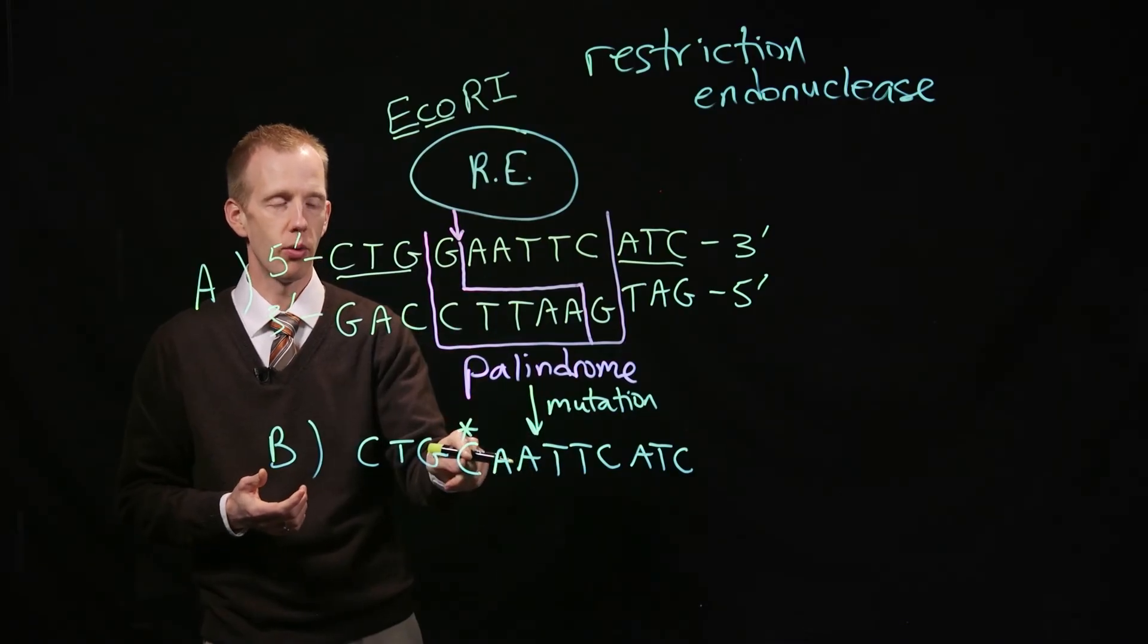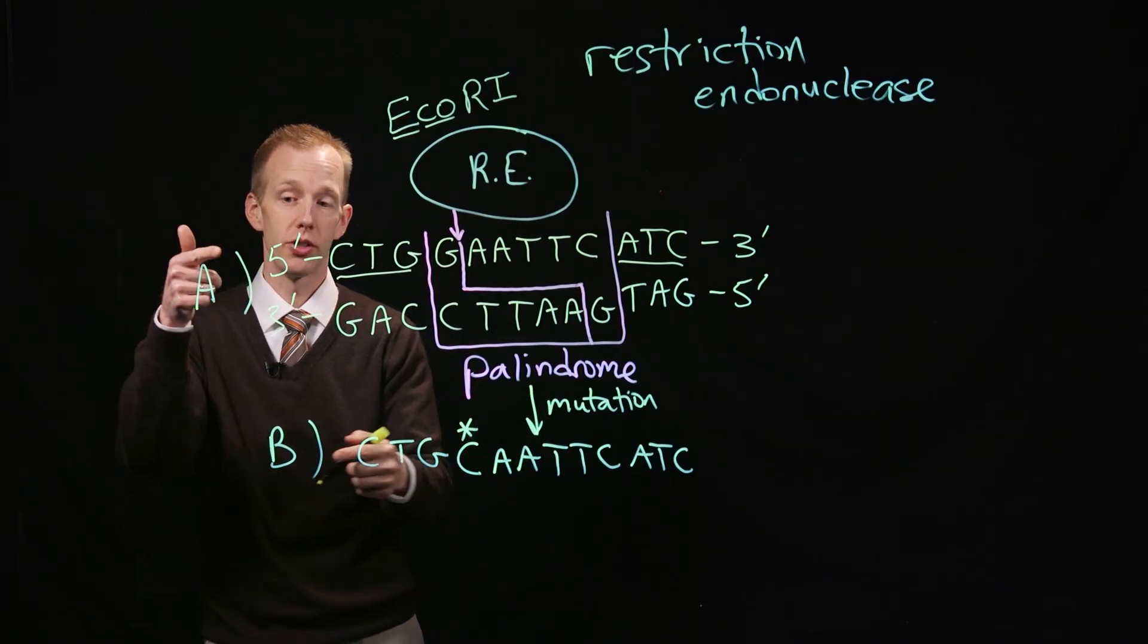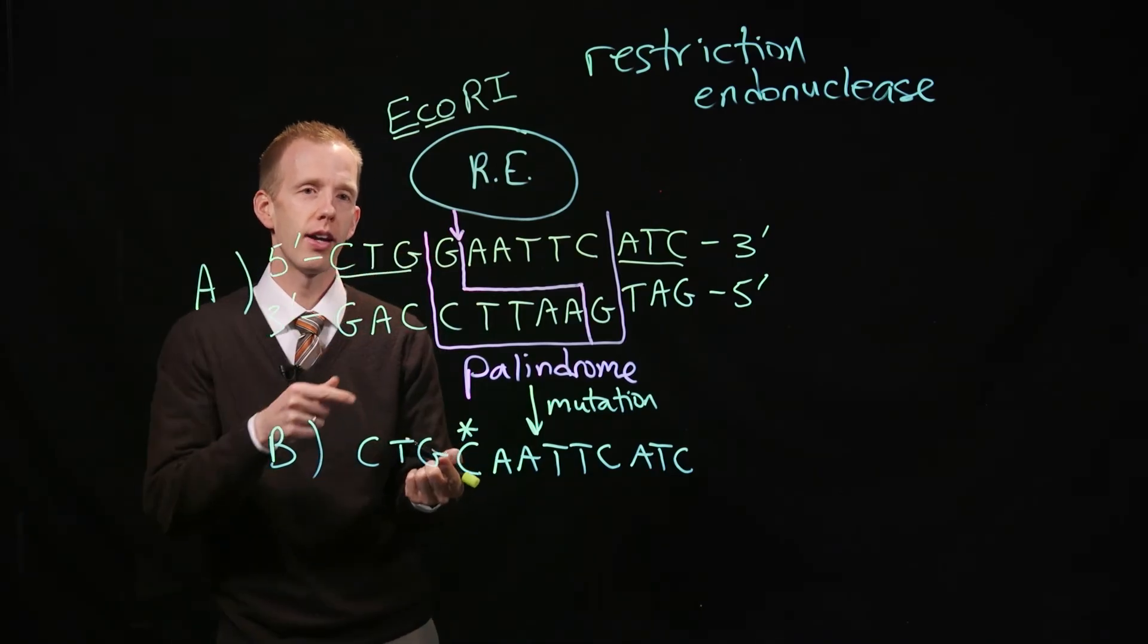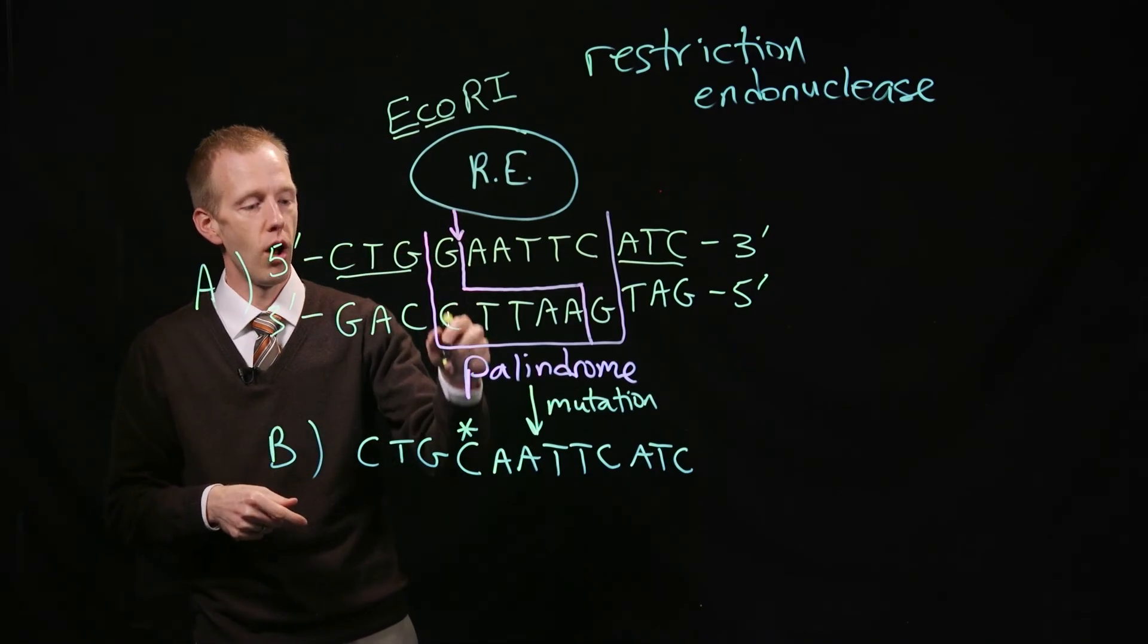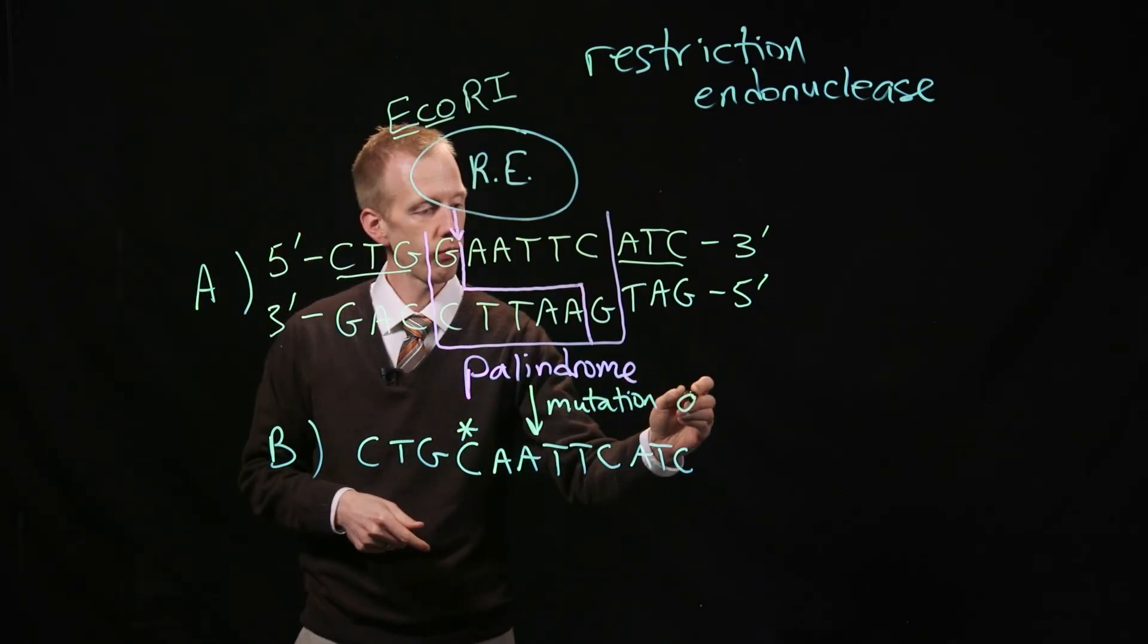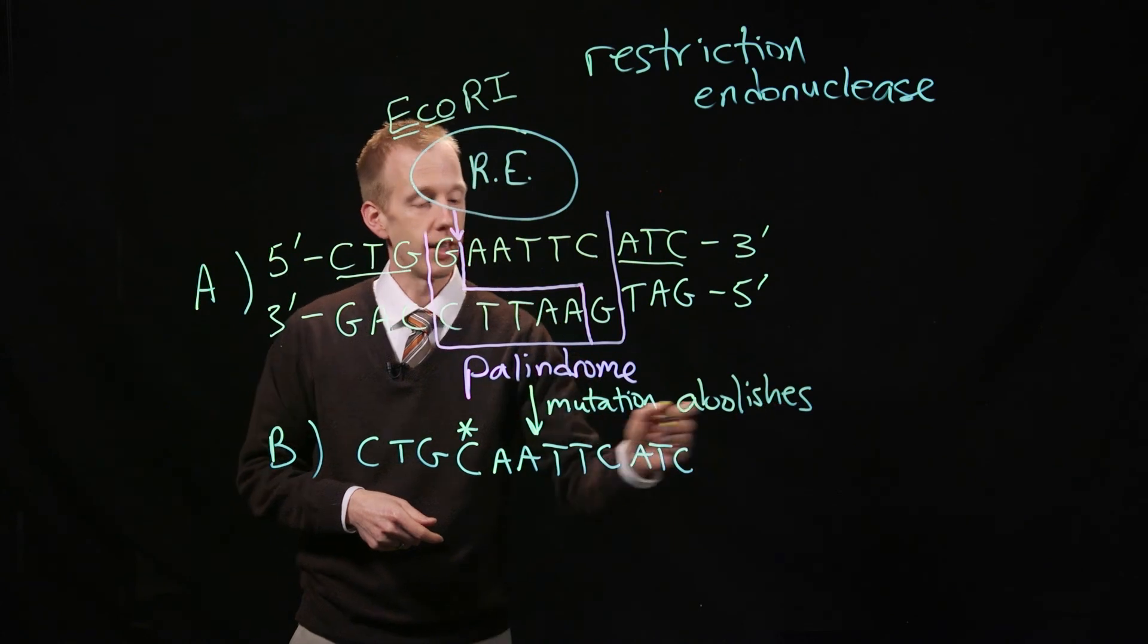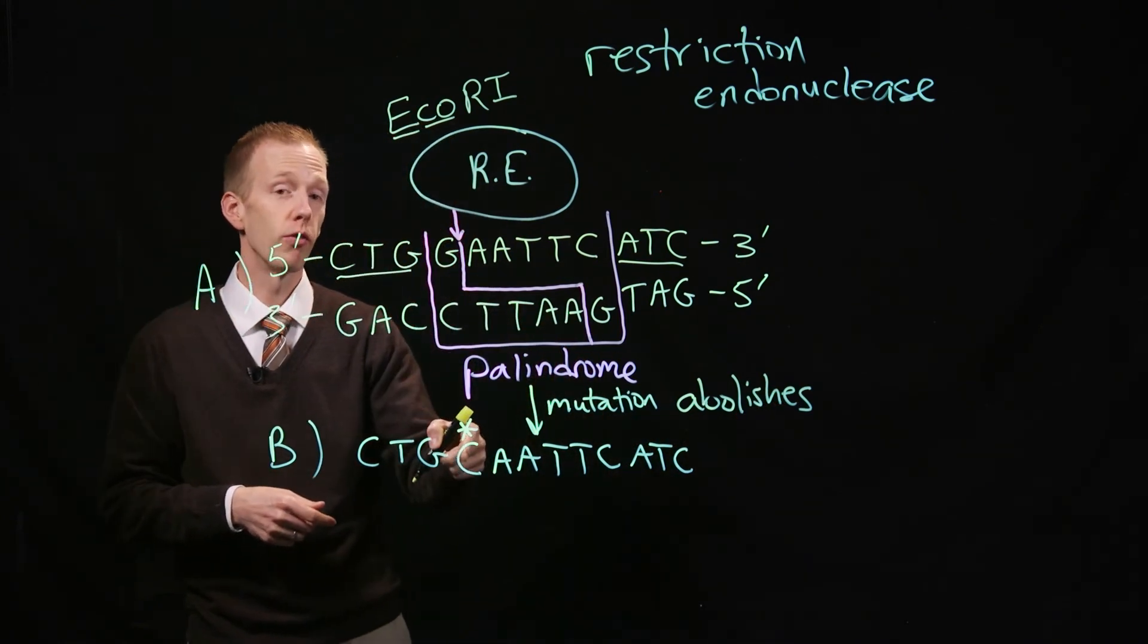That would be one way to determine whether those two individuals, individual A and individual B, shared the same sequence, or if they had a sequence that either abolished or gets rid of a restriction site.